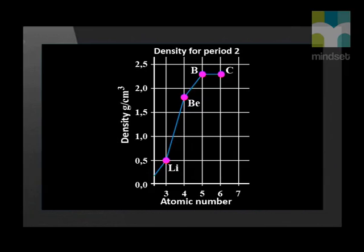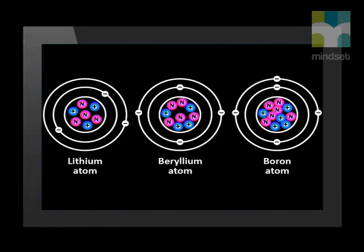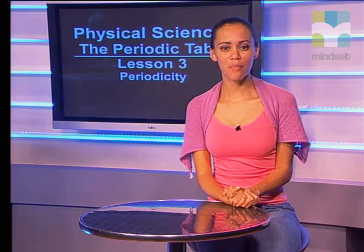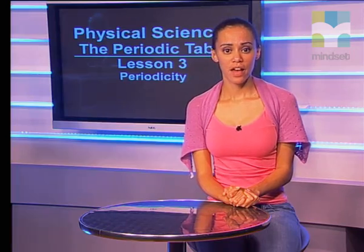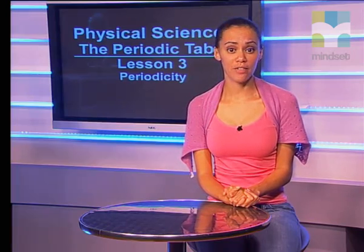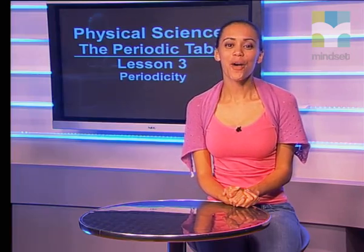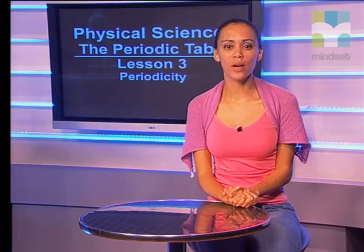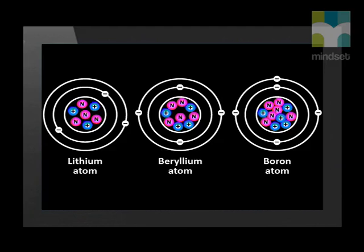We can see from this graph that the density of the metal elements increases as we move across period 2. But why is this? As we move across the period, the number of protons and neutrons increases, although the number of occupied energy levels stays the same. Most of the mass of an atom is derived from its nucleus. The number of occupied energy levels determines the volume of the atom, and so the volume of the atom is more or less constant. Since density equals mass divided by volume, the density increases across period 2 for the metal elements.